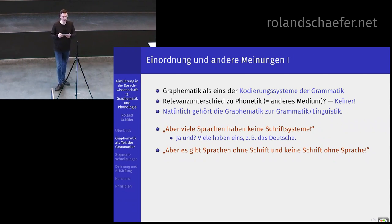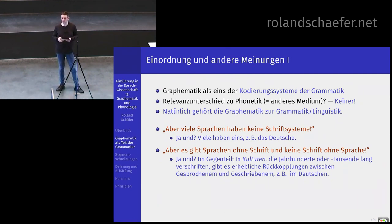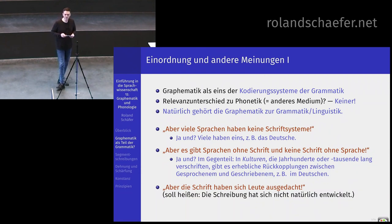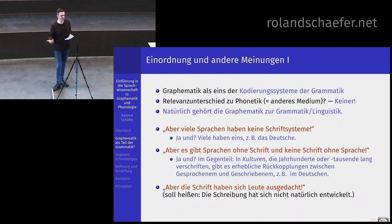Dann gibt es ein Argument, was man öfter hört: es gibt ganz viele Sprachen ohne Schrift, aber keine Schrift ohne Sprache. Da sage ich auch: ja und? In Kulturen, in denen seit Jahrhunderten oder Jahrtausenden verschriftet wird, gibt es erhebliche Rückkopplungen zwischen Schrift und dem restlichen System. Zum Beispiel im Deutschen. Und dann so ein schönes Argument: die Schrift haben sich einfach mal Leute ausgedacht, die Schreibung hat sich nicht natürlich entwickelt. Machen wir mal Diachrone Graphematik und gucken wir, wie sich das entwickelt hat.